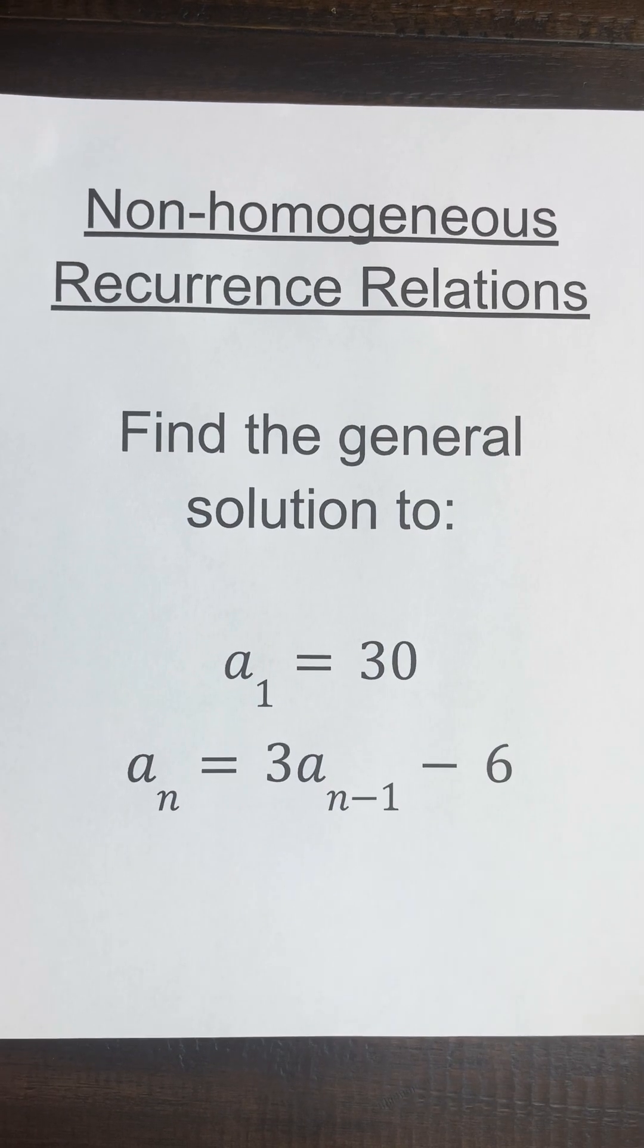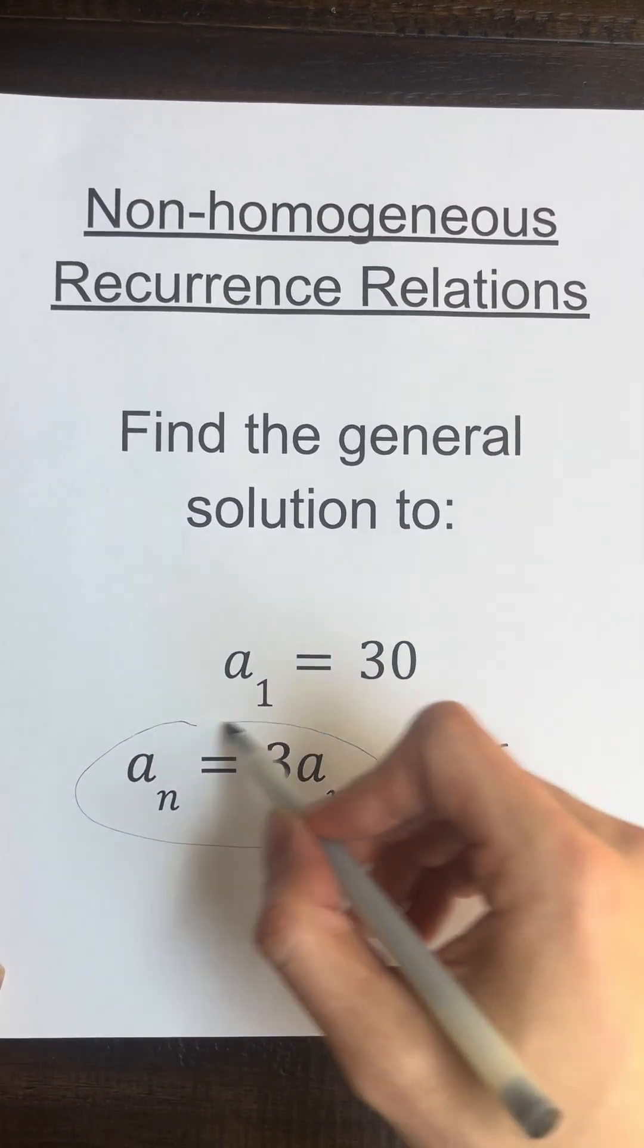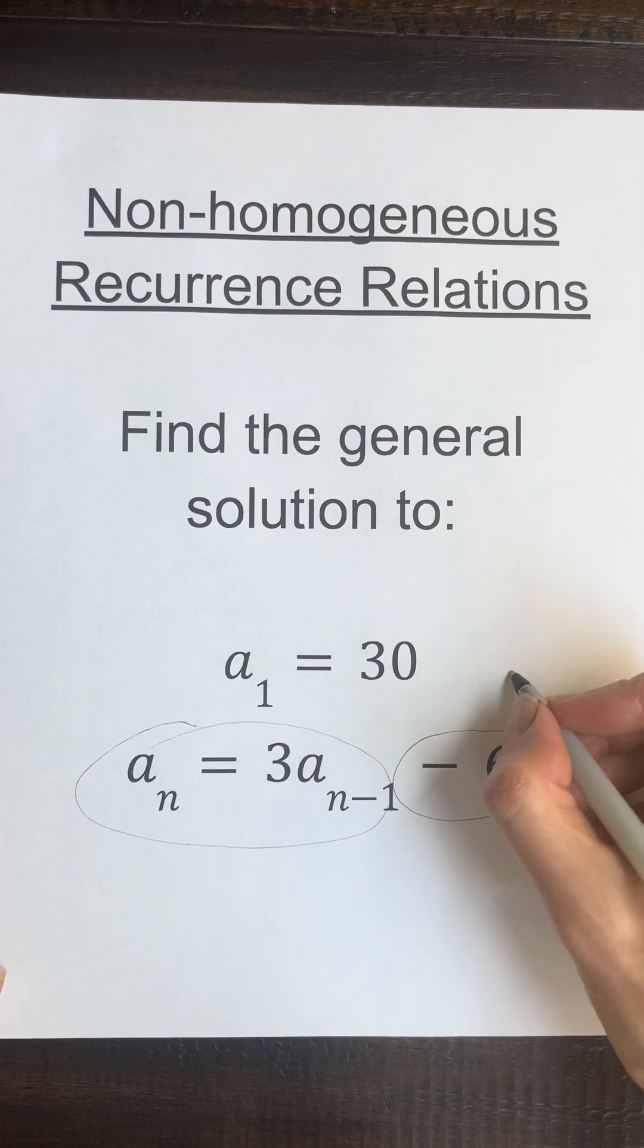A non-homogeneous recurrence relation looks exactly like a homogeneous one, except there's a function added on at the end.